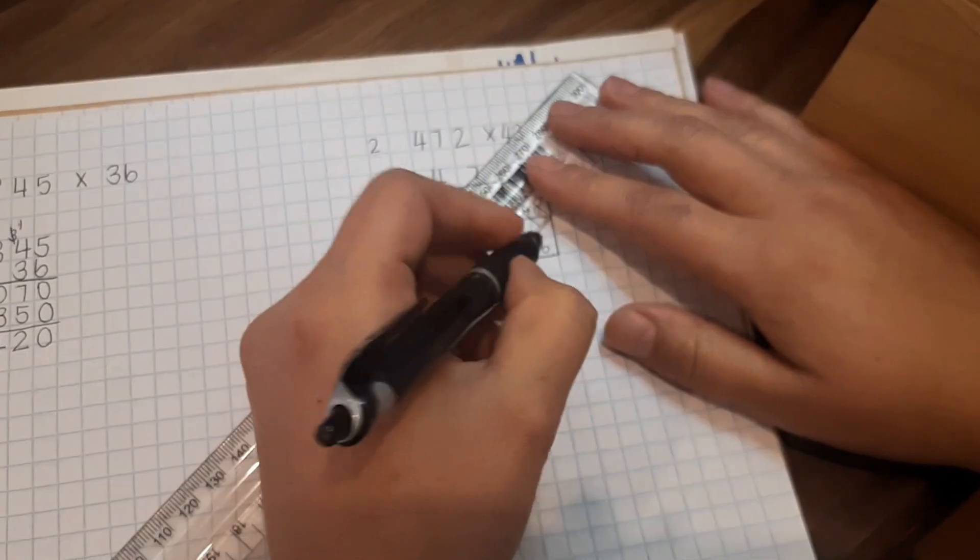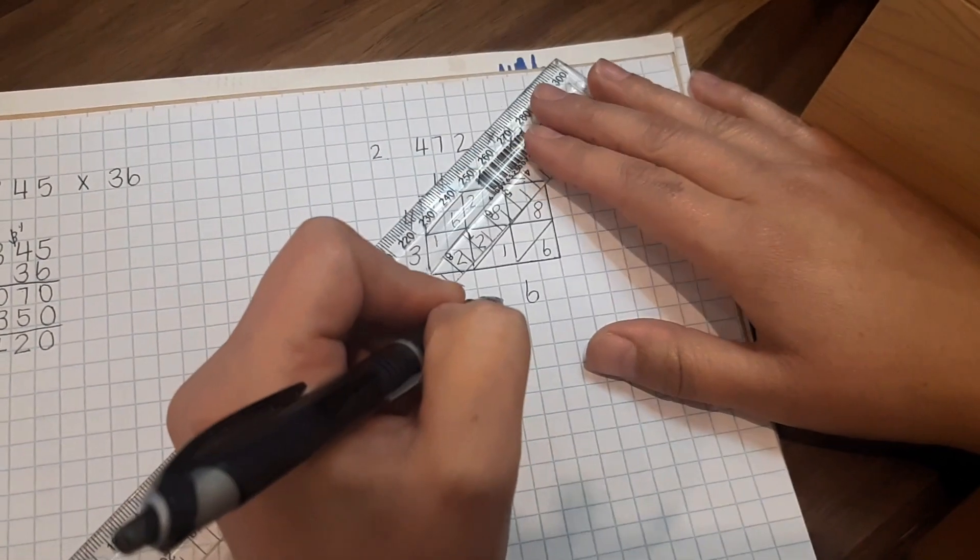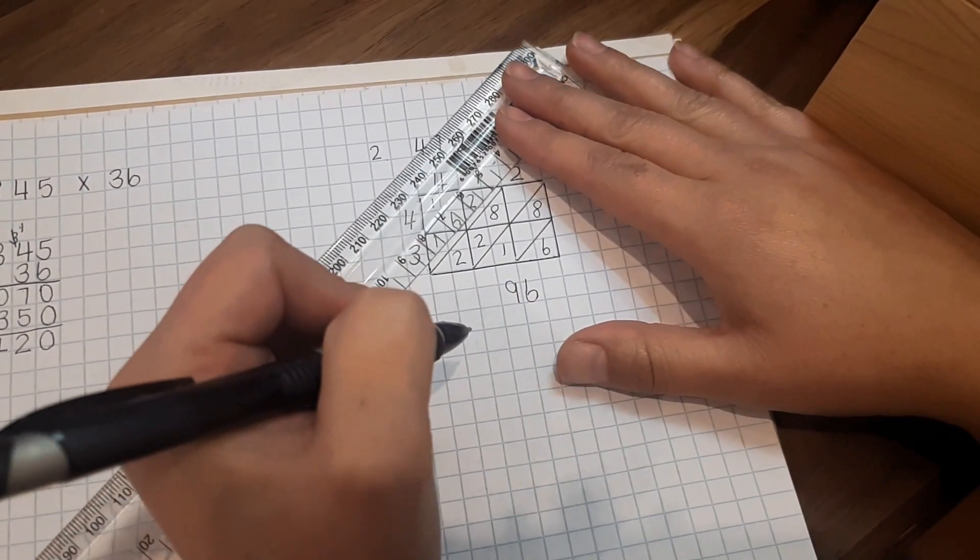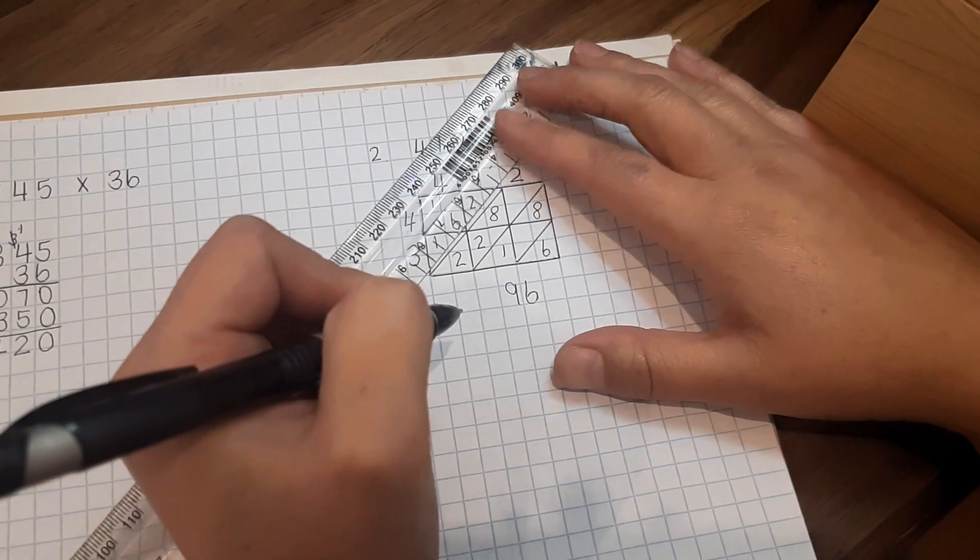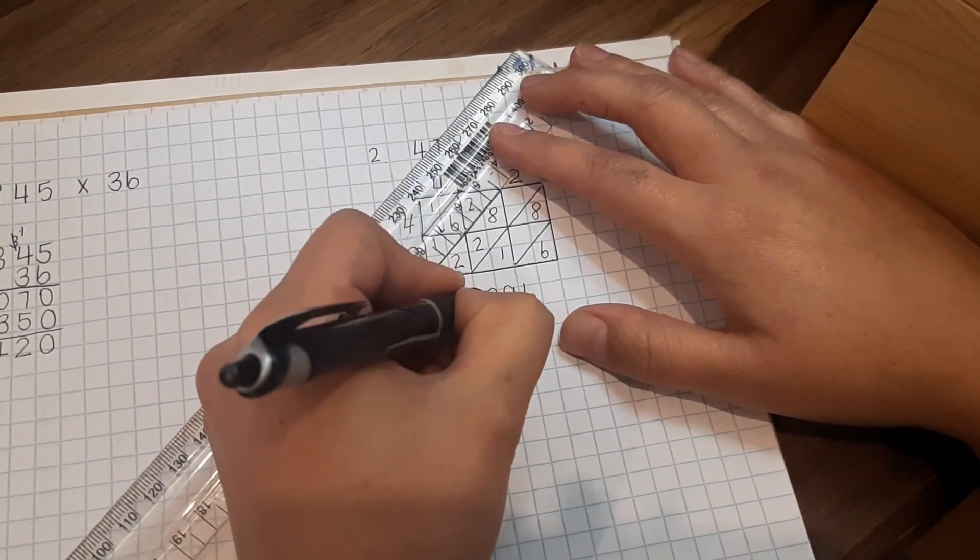Now we take our ruler. 6 is the only one there. 8 plus 1 is 9. Move it up. 8 plus 2 is 10 plus another 2 is 12.